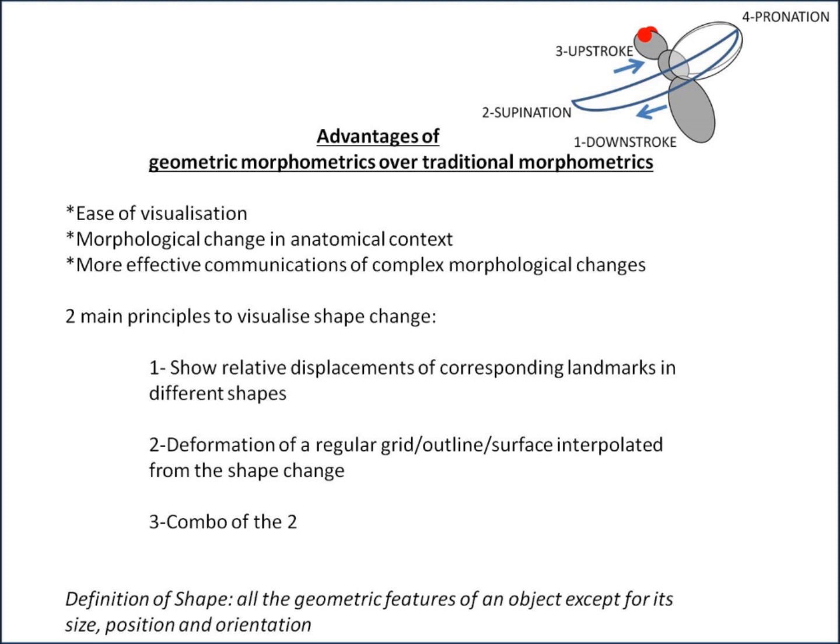Now just a quick definition: what is shape? Strictly speaking it's defined as all the geometric features of an object except for its size, position and orientation. You'll notice that because it excludes size, this ascribes to the Gould-Mosimann school of thought rather than the Huxley-Jolicoeur, but that's another video.